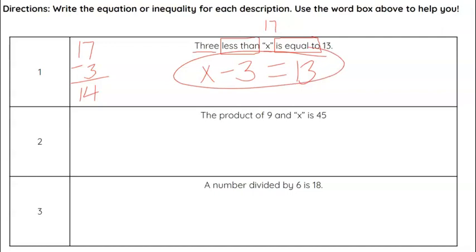The next one, we have the product, product is a key word for multiply, of 9 and x is 45. So product of 9 and x, to do that with a variable, you just do 9x. You don't need any symbol because that means multiply. Is is equal sign, and then 45.